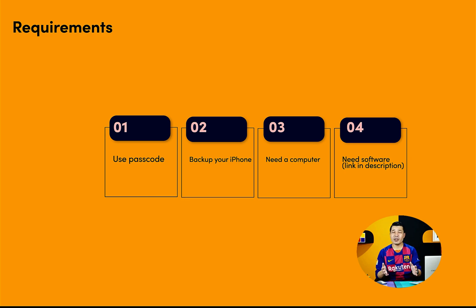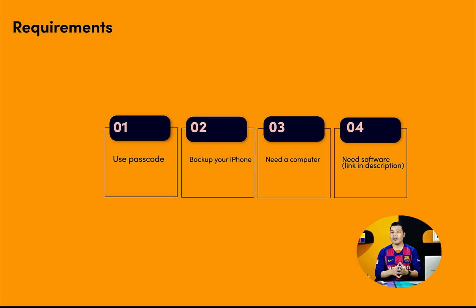It doesn't matter whether the computer is Mac or Windows — this process works on both. Number 4, you need a software to unlock your iPhone. I will leave the link in the description below so you can get it from there. Also, this is not a requirement, but something I wanted to share: for this method to work, Find My iPhone doesn't have to be turned off. This process will work even if Find My iPhone is turned on.